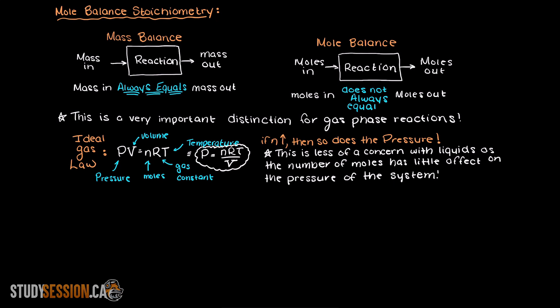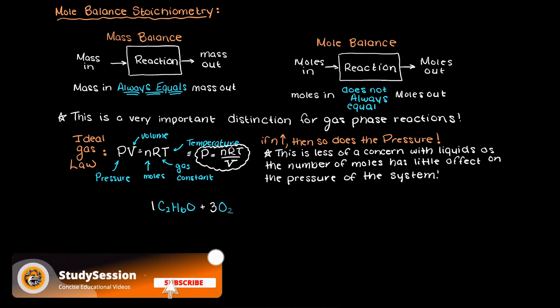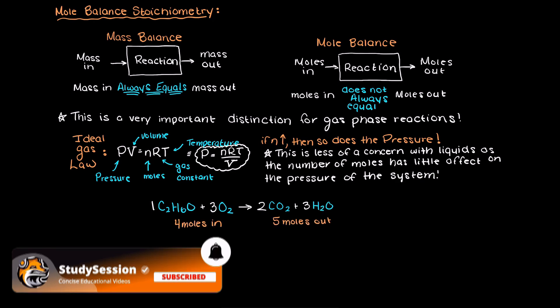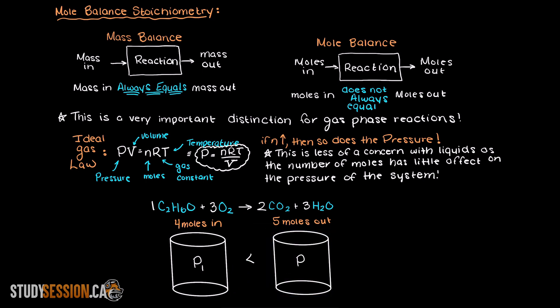Let's examine the complete combustion of ethanol. Assuming that all of the components are in the gas phase, it is clear that we have 4 moles of gas on our left — our reactants — and 5 moles of gas on our right, which has our products. I just wanted to mention this early on in the course as when we get to future reactor designs, we must take this into account.